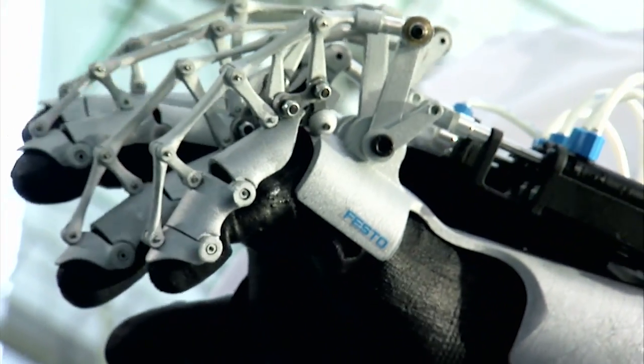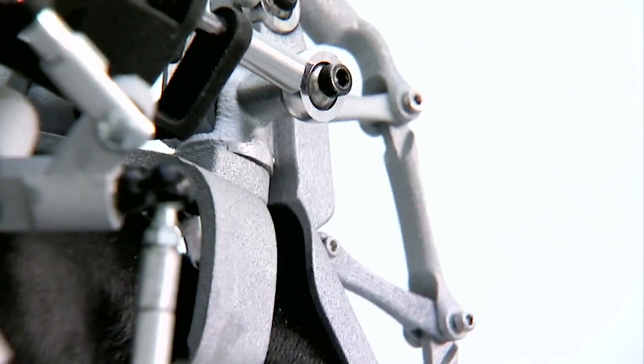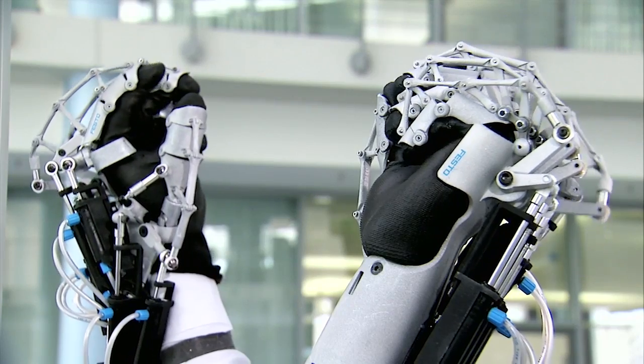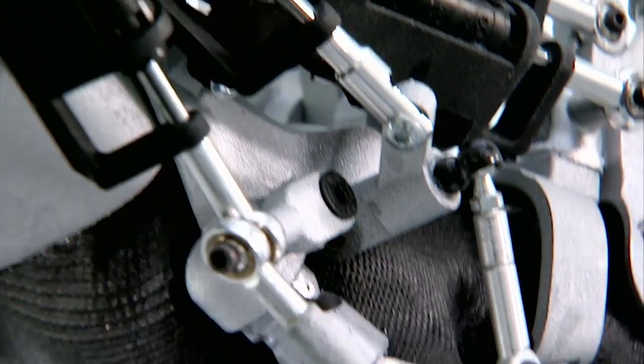An entirely new development in this field is the ExoHand, an assistance system for industrial production. The ExoHand is an external structure with pneumatic actuators that is worn on the hand like a glove. With the ExoHand, the wearer's fingers can be actively moved and their forces amplified.